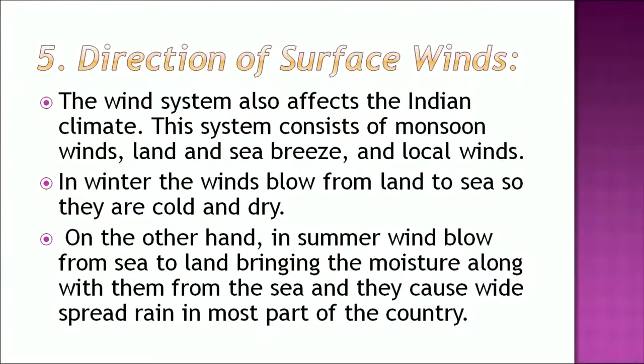Direction of surface wind is another factor influencing the climate. The wind system consists of monsoon winds, land and sea breeze, and local winds. In winter, the winds flow from the land to the sea, so they are cold and dry. On the other hand, in summer, winds blow from sea to land, bringing moisture along with them from the sea, and they cause widespread rain in most parts of the country.